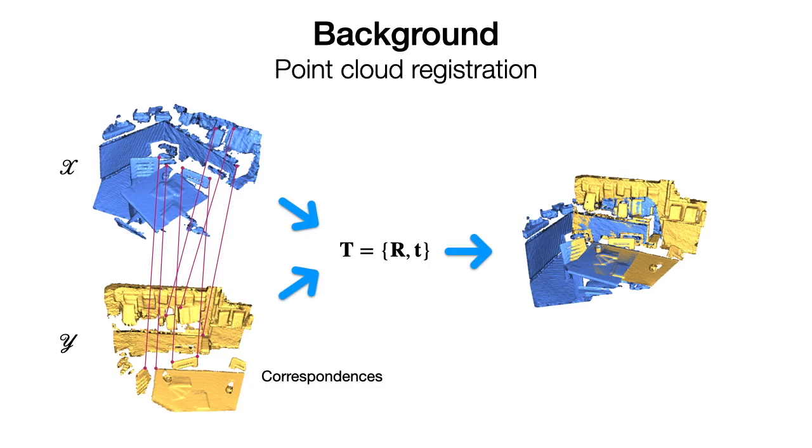A standard registration pipeline usually first extracts correspondences between them and then solves for the transformation.